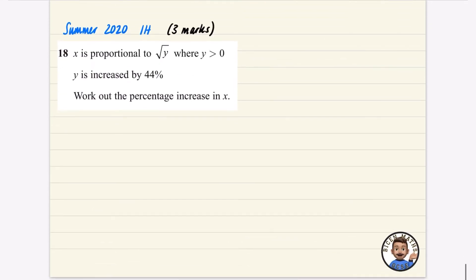Last one I'm going to show you is from the 2020 series. And this is paper 1H, which also means that it is non-calculator. And they've blended this question with some percentages. So it says that X is proportional to the square root of Y. So X is equal to K, the square root of Y. And it does say that Y is greater than zero. We might need that, we might not.